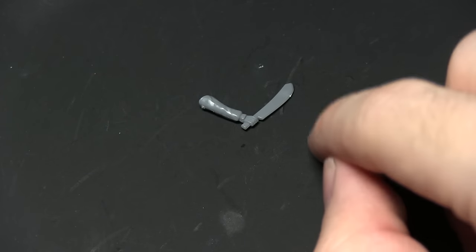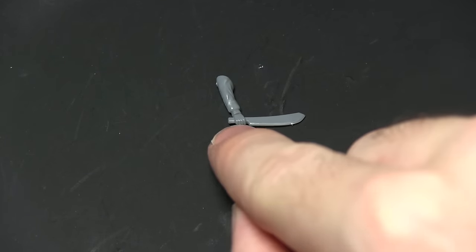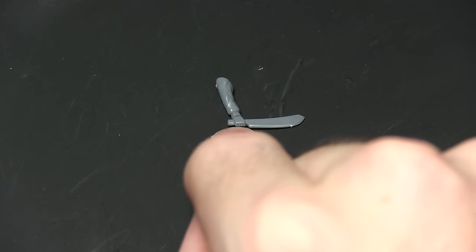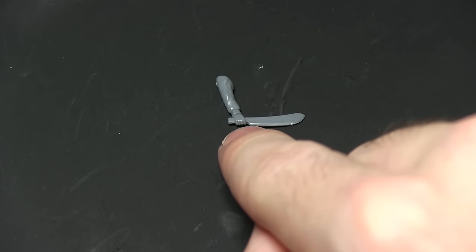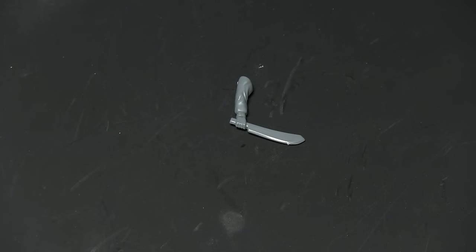For the second crew member we will now want to take component 34 which is this machete arm and trim off the machete itself. Now I'm going to be using a hobby knife to remove the handle there and also the actual blade itself from the top of the hand, leaving the hand itself intact in this closed fist position.